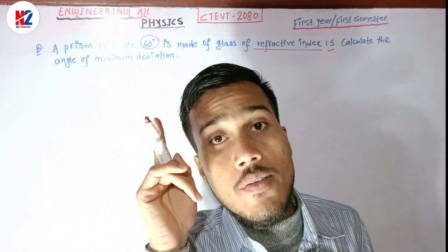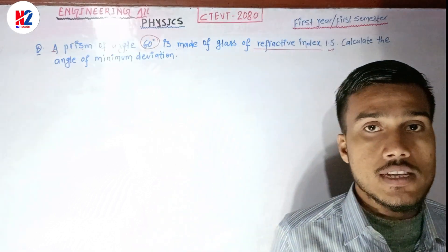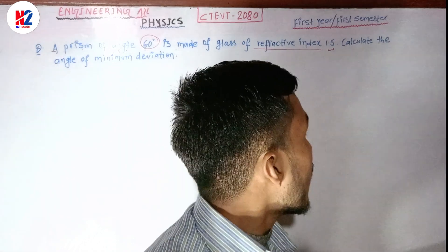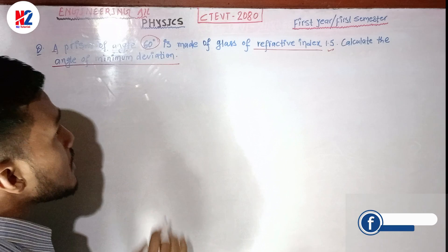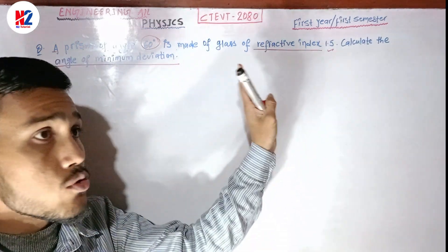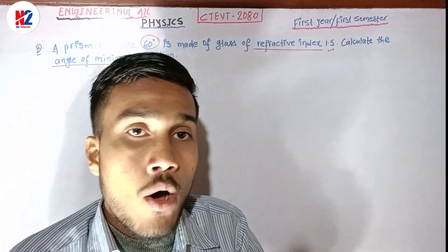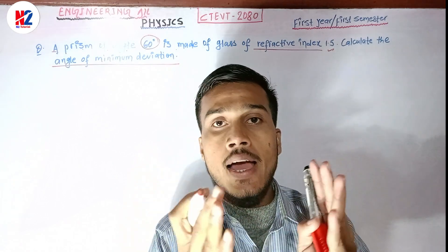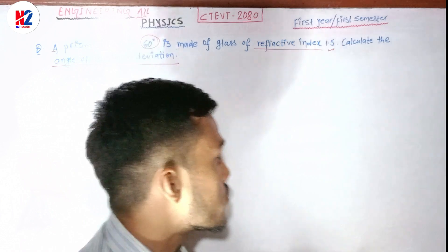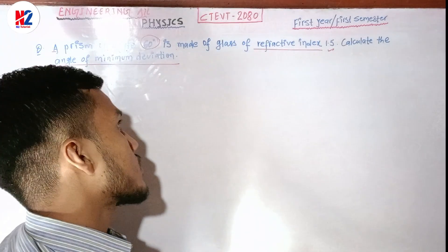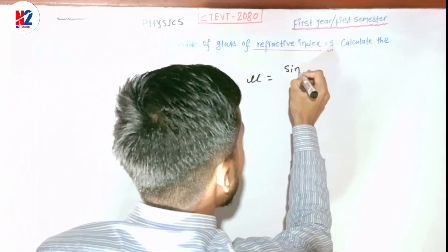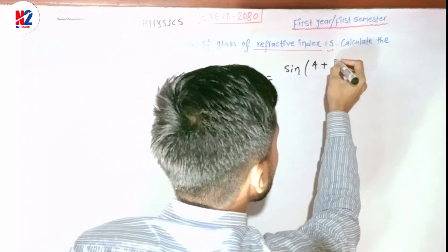This is from the prism chapter - refractive index. This numerical is most important for the exam. There is no other way - you have to calculate the angle of minimum deviation. The angle of minimum deviation is what this numerical is about. We will start with the working formula.